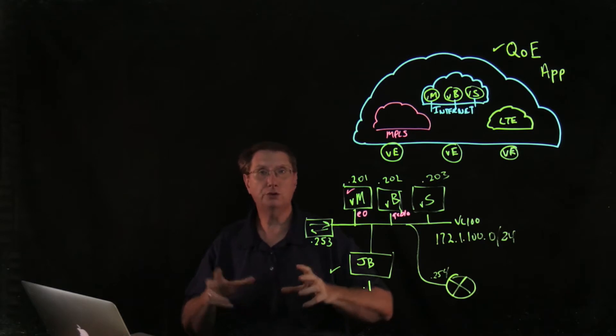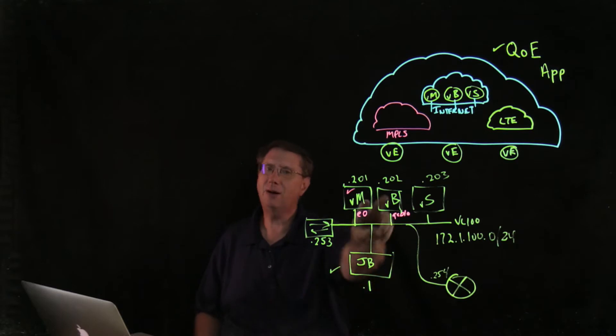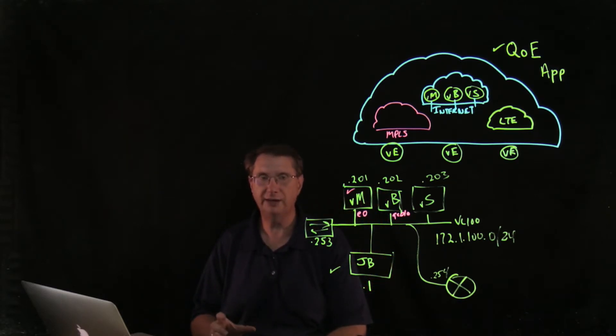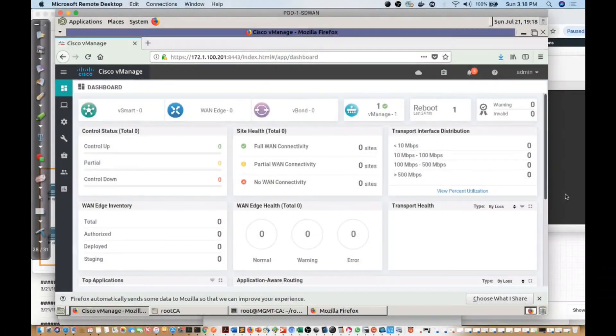We're going to configure the tunnel interface configurations. vBond's a little bit different, so there's going to be one additional command. But when we get this taken care of, we should see our devices appear inside of our vManage console.